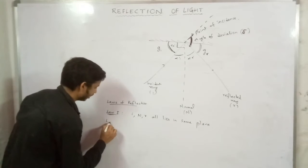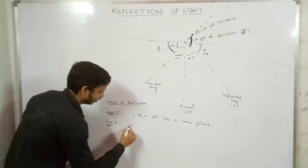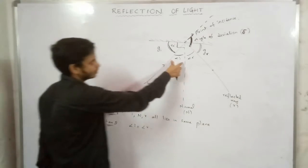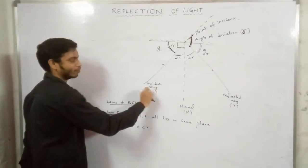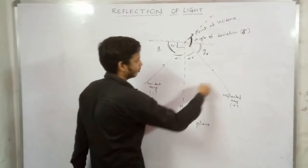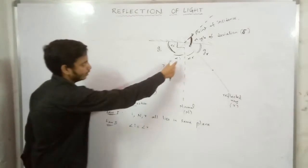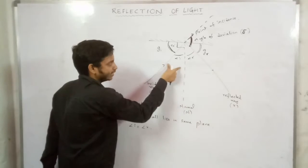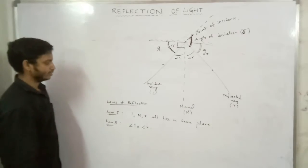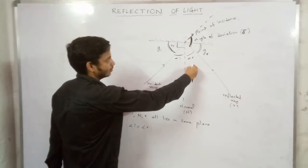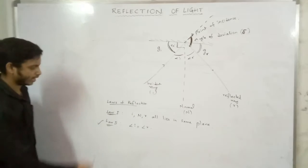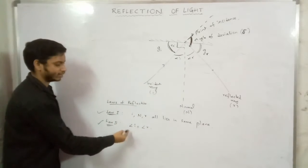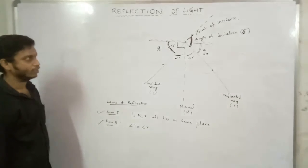Second law: the angle of incidence is equal to the angle of reflection. The angle between the normal and the incident ray equals the angle between the normal and the reflected ray. So if the angle of incidence is 30 degrees, the angle of reflection is 30 degrees; if 40 degrees, then 40 degrees; if 80 degrees, then 80 degrees. The angle of incidence is always equal to the angle of reflection.